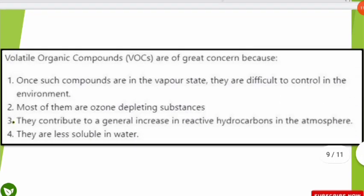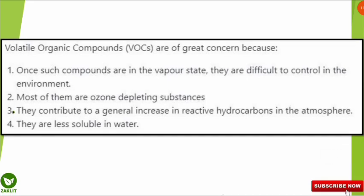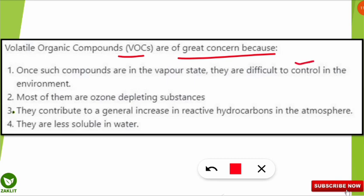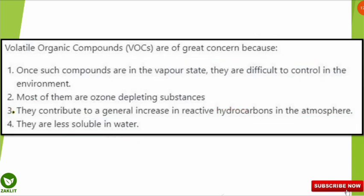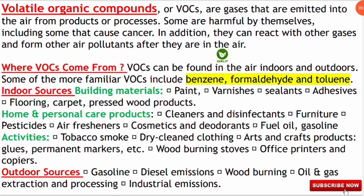The next question is on volatile organic compounds, a very important and frequently asked topic. The question was: VOCs are of great concern because of which of the following reasons? The options were: once in vapor state they are difficult to control; most are ozone depleting substances; they contribute to a general increase in reactive hydrocarbons in the atmosphere; and they are less soluble in water. The correct option is number 3 — VOCs are of great concern because they contribute to the general increase in reactive hydrocarbons in the atmosphere.